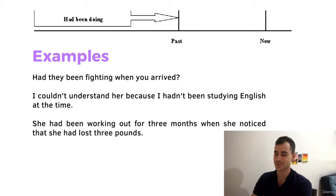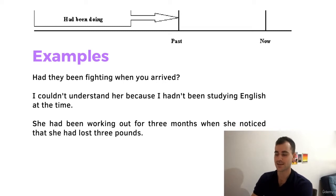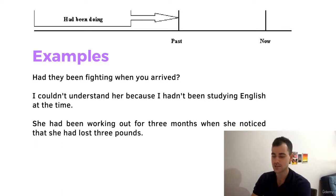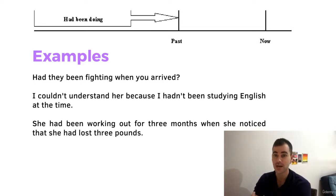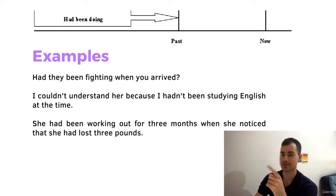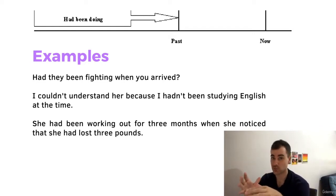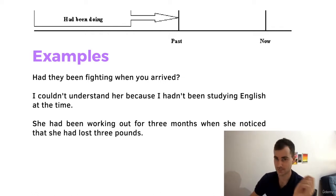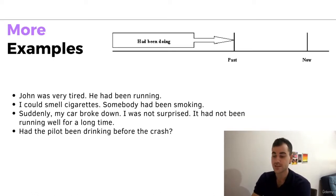Here are some more examples. Had they been fighting when you arrived? I couldn't understand her because I hadn't been studying English at the time. She had been working out for three months when she noticed that she had lost three pounds. When you arrived is the point in the past. Fighting is what they had been doing before that point in the past.